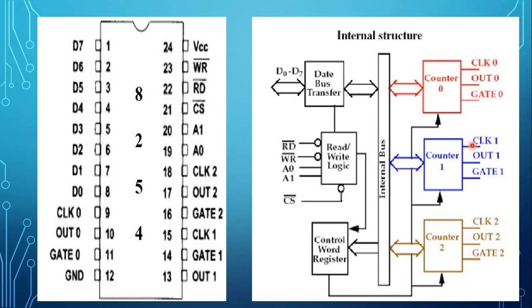The 8254 functional block diagram consists of three counters: counter 0, counter 1, and counter 2, in addition to a data bus buffer, read/write control logic, and control word register. Pin numbers 1 to 8 indicate D0 to D7, which are bidirectional three-state data bus lines connected to the system data bus.